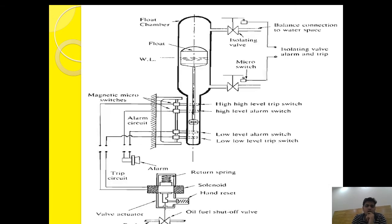If the water level decreases and the fuel supply remains on, the steaming process continues, which will cause the burning of the tubes and damage to the boiler. To prevent this damage, when the water level inside the boiler falls beyond a certain limit, the trip switch is activated.